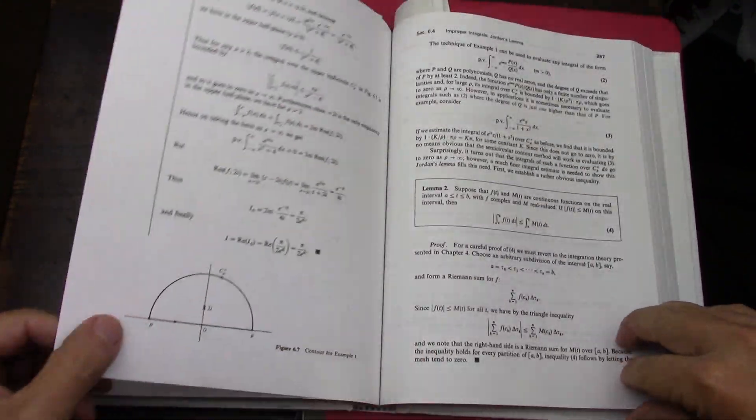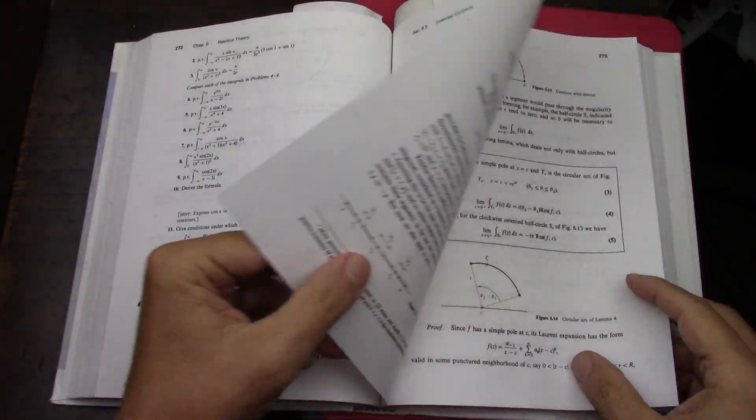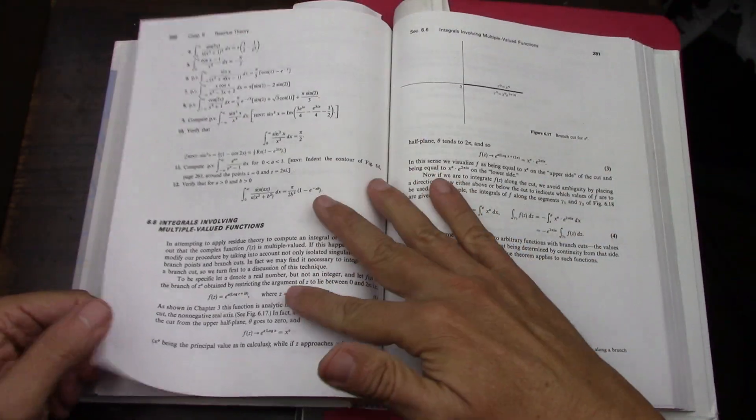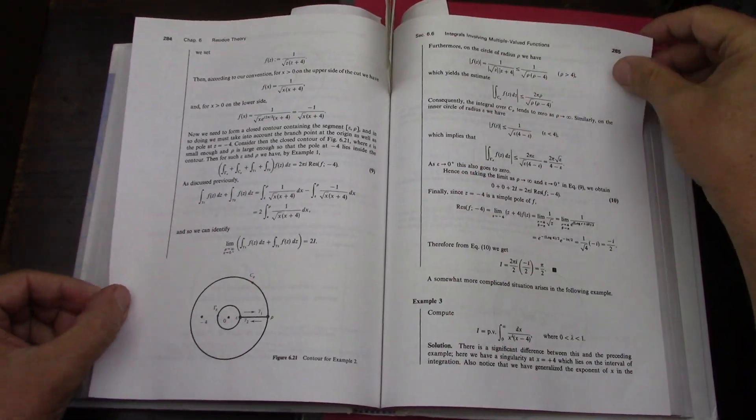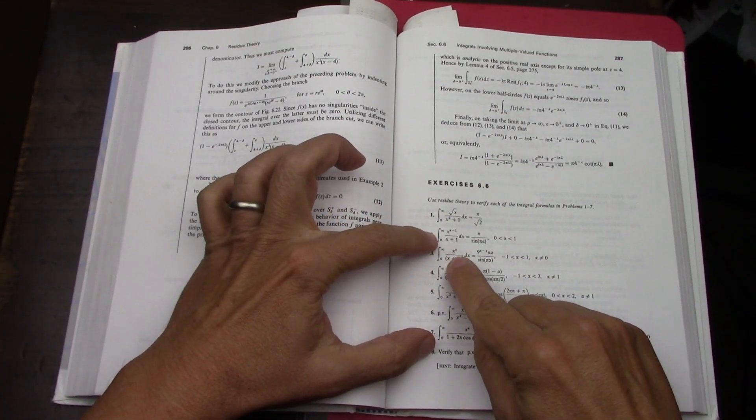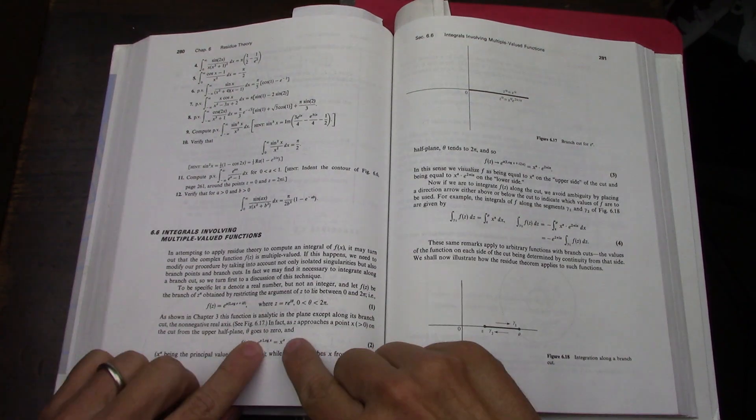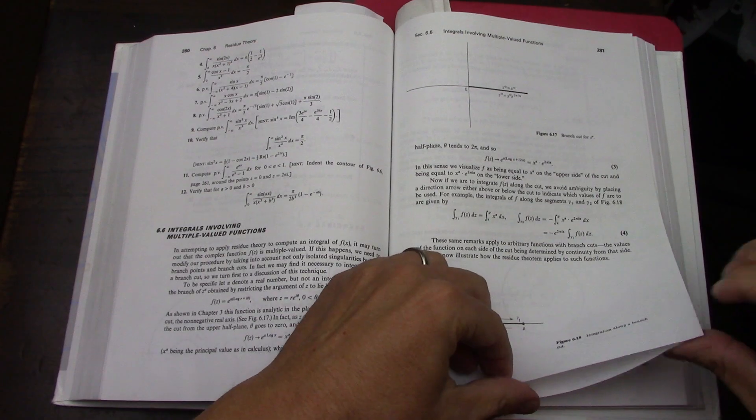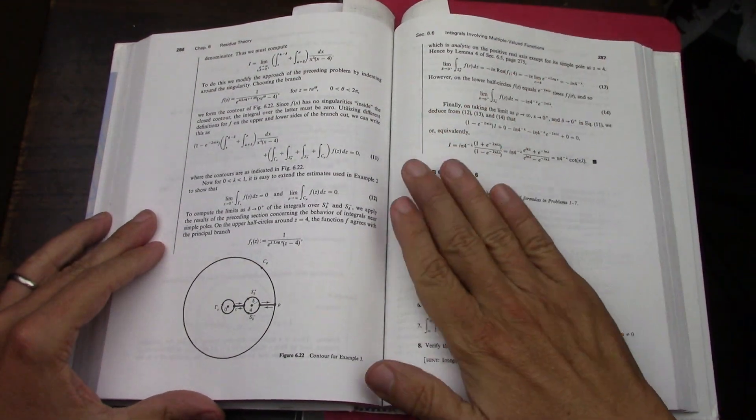I've gotten as far as the end of section 6.6. Once you get into powers of x to the alpha, which can be rewritten as e to the alpha log x, things get a little more complicated. So I've been working through those but I think this is more of a next week thing.